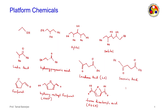Natural rubber's monomer isoprene is also a platform chemical. In our current lecture, we will focus on levulinic acid, succinic acid, FDCA, HMF, and ethanol.